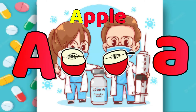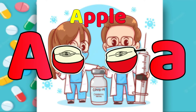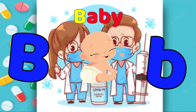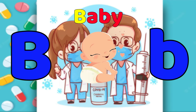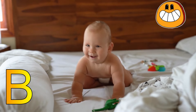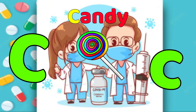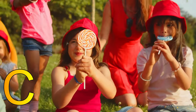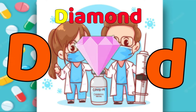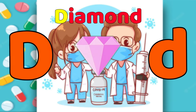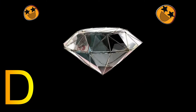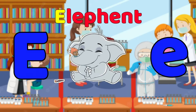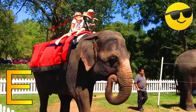A is for Apple, A-A-Apple, A-Apple. B is for Baby, B-B-Baby, B-Baby. C is for Candy, C-C-Candy, C-Candy. D is for Diamond, D-D-Diamond, D-Diamond. E is for Elephant, E-E-Elephant, E-Elephant.